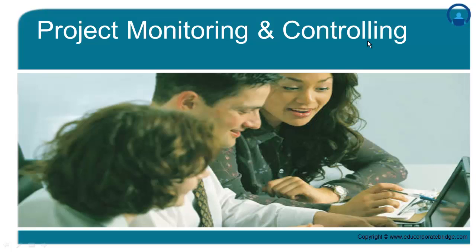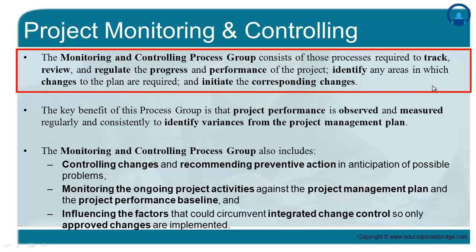Let us start with the fourth process group in the project management lifecycle called Project Monitoring and Controlling. This is the process area in which project performance is observed and any variations to the performance with respect to the project management plan are identified and corrective actions are suggested in order to bring back the project performance in line with the project management plan. The monitoring and controlling process group consists of those processes required to track, review, and regulate the process and performance of the project.